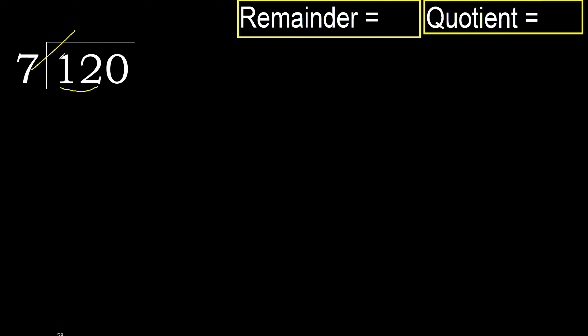7 multiplied by 2 is 14. 14 is greater, so multiply by 1: 7 is not greater. 12 minus 7 is 5.